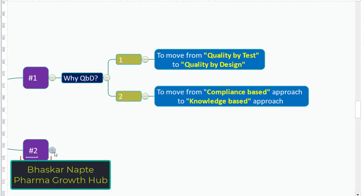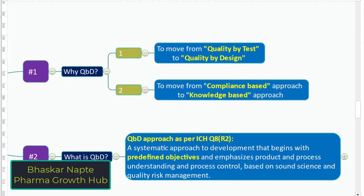Let us now talk about what is meant by QBD. Here is the definition of quality by design given in the ICH guideline Q8: 'A systematic approach to development that begins with predefined objectives.' This predefined objective is very important because it connects to a term called QTPP, which we will discuss shortly. There is a need to begin development with predefined objectives, and to emphasize product and process understanding and process control based on sound science and quality risk management. Quality risk management is part of ICH guideline Q9, and it helps you understand what is the right process for a particular product. Once you understand those right processes and right materials, you are going to achieve the predefined objective.